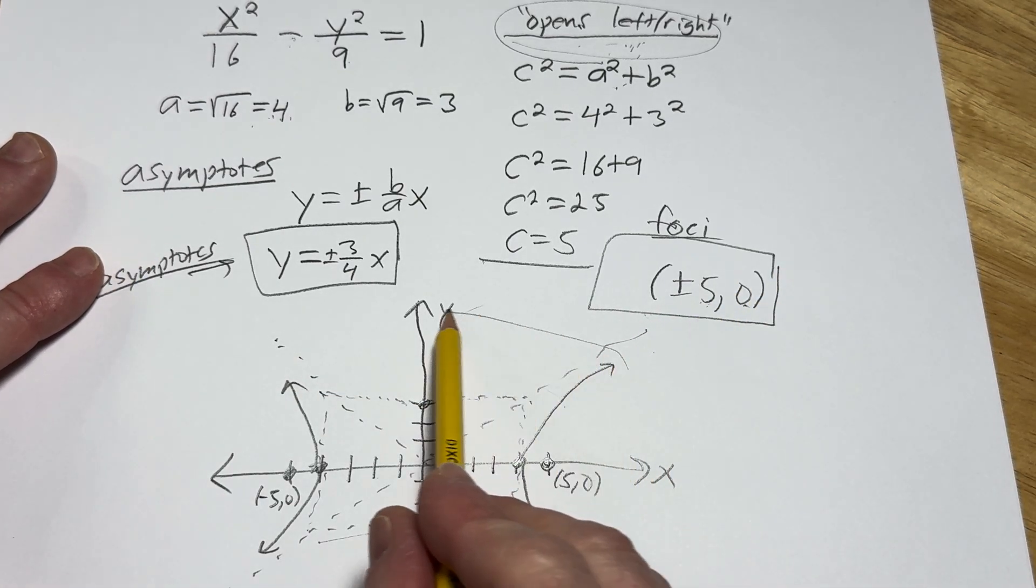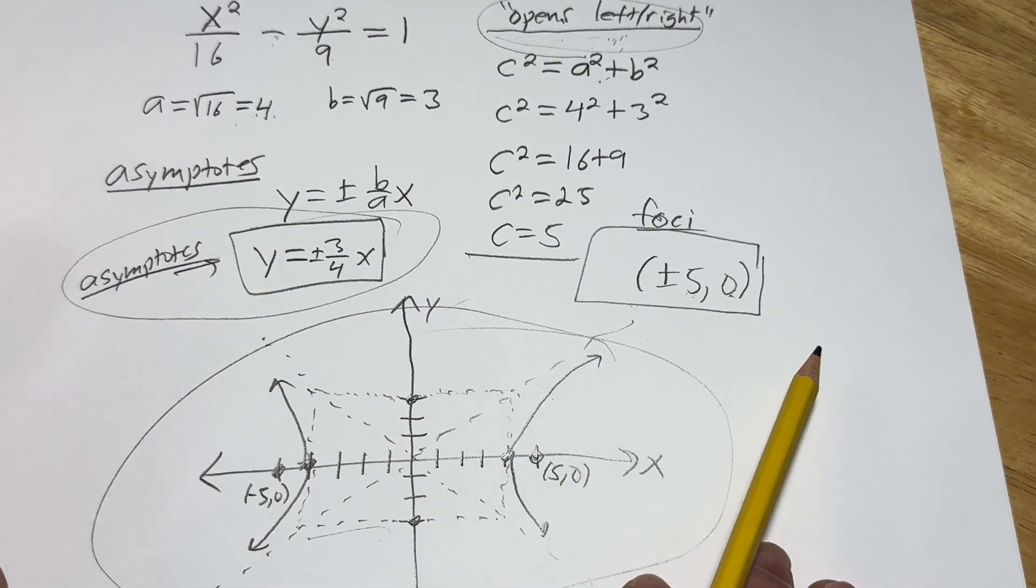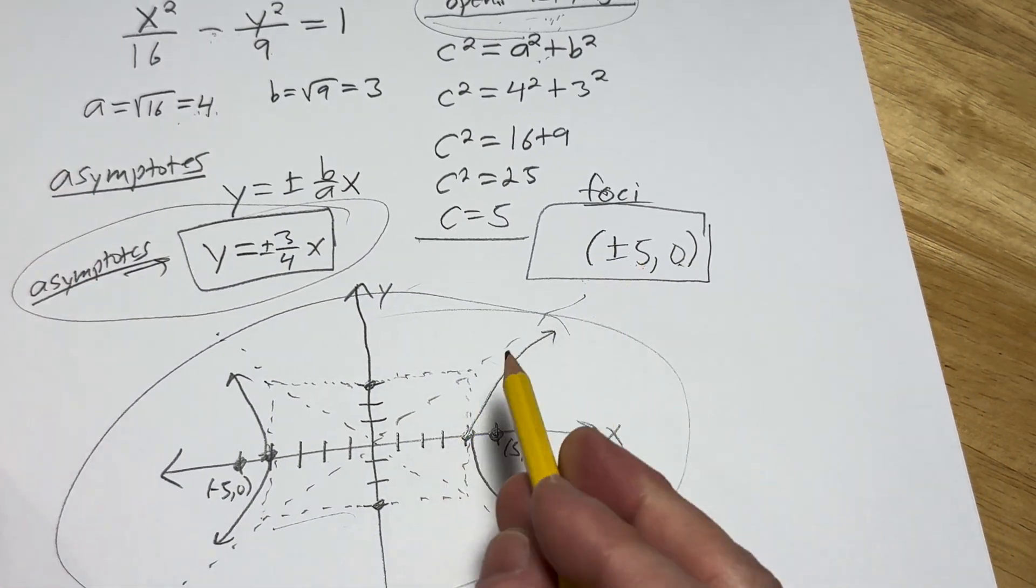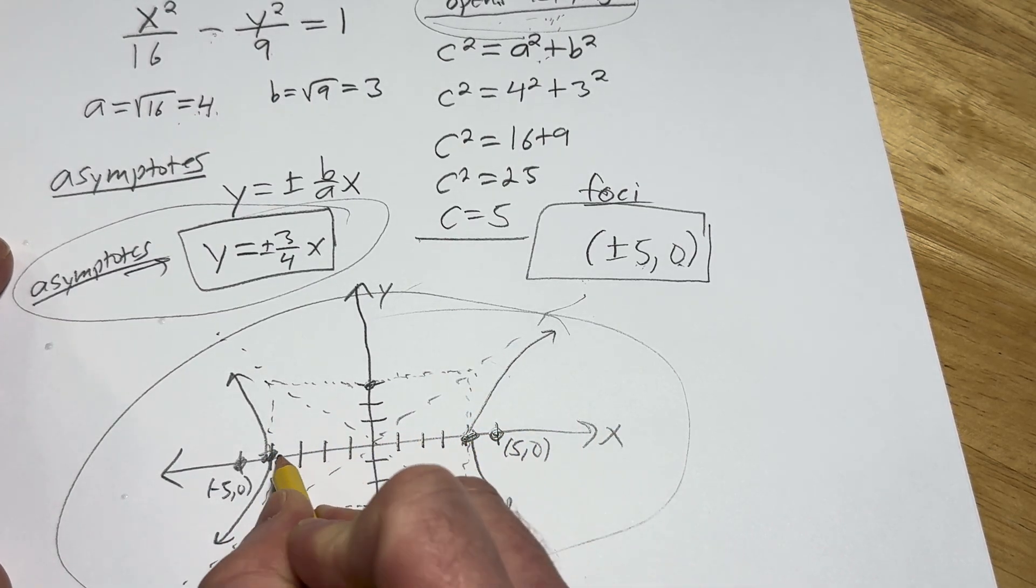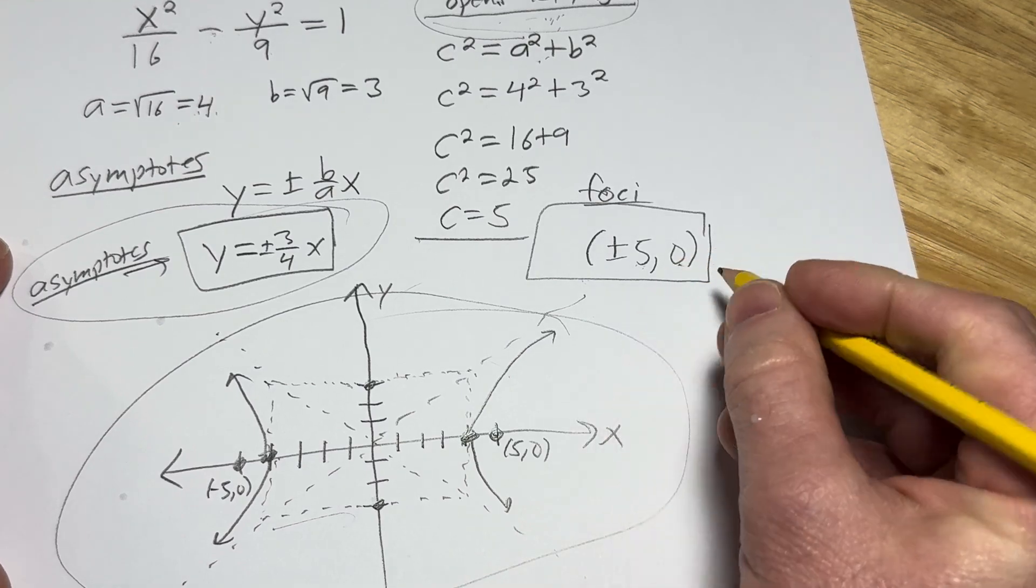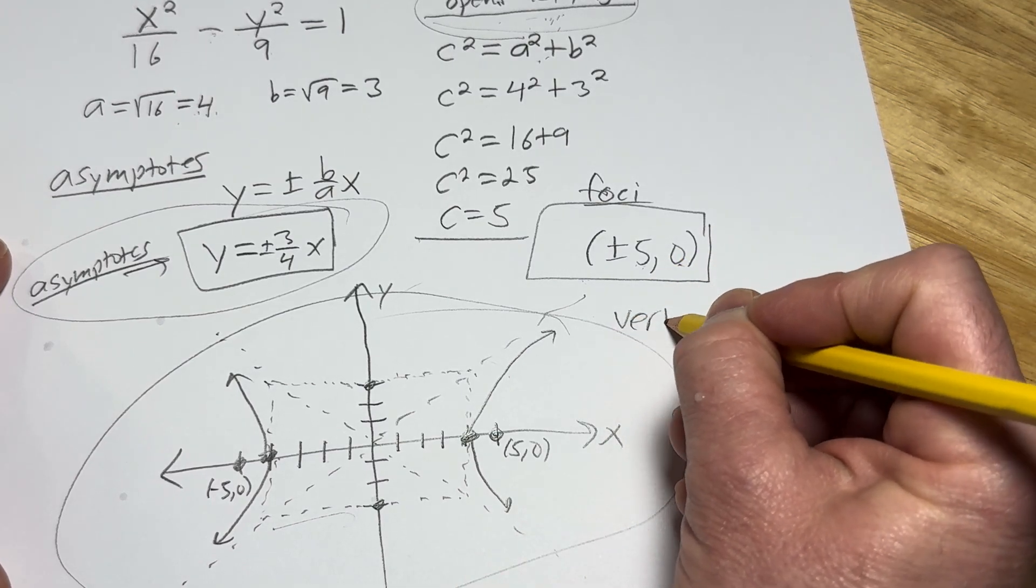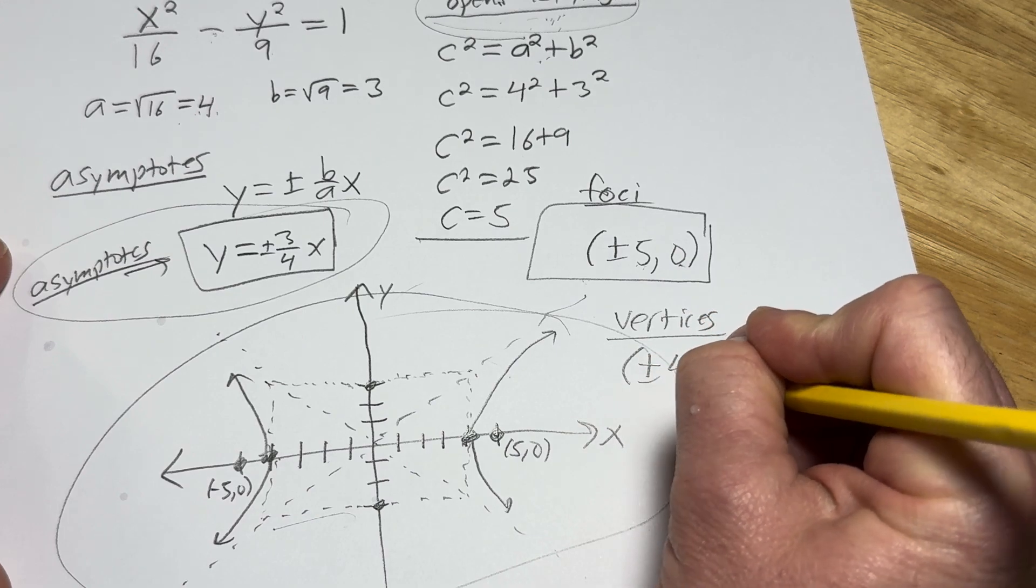And I believe that's it. We've got the graph, right? We've got the asymptotes. Oh, we're missing the vertices. So what are those? Those are actually on the hyperbola. So the vertices are here. So it'll be 4, 0 and negative 4, 0. So the vertices are going to be plus or minus 4, 0.